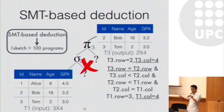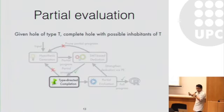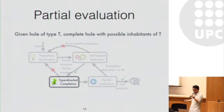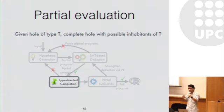This is one case where SMT deduction rejects the hypothesis. On the other hand, if it cannot reject the current partial program, our system will continue and try to complete the program in a type-directed manner — given a hole of type T, we will complete that hole with any inhabitant of type T. For instance, if you have an integer hole, we enumerate all possible candidate integers.